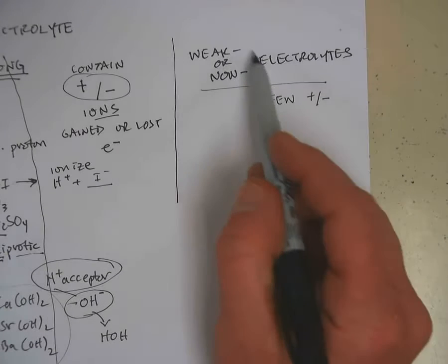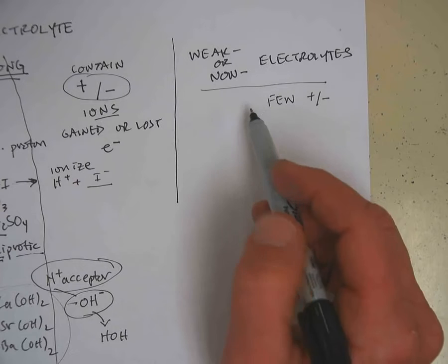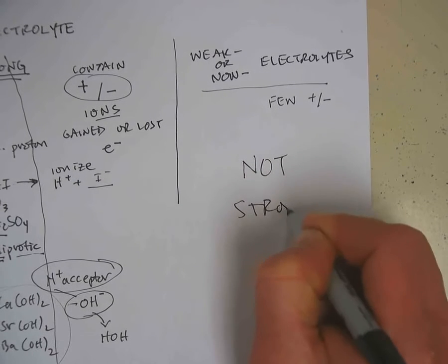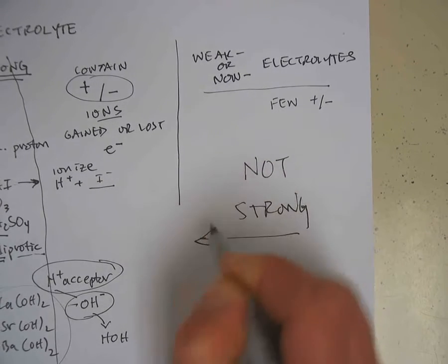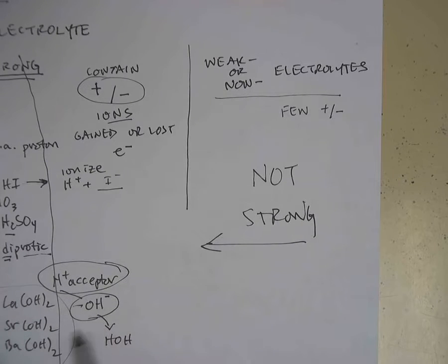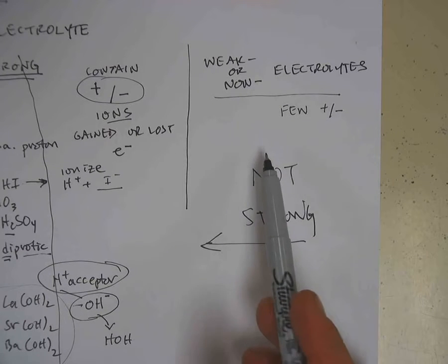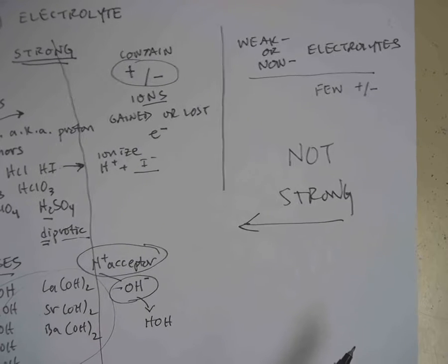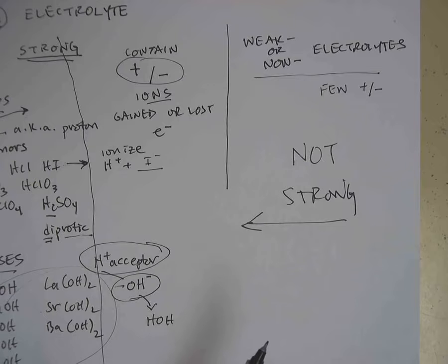Now, to know if it's a weak or non-electrolyte, it simply has to be not strong. So if it's not one of the things that I just mentioned over here, it's a weak or not. And for some people that's a difficult classification. Once you classify something as a strong, weak, or non, you now can write it as its ions or in what's called its ionic equation form.